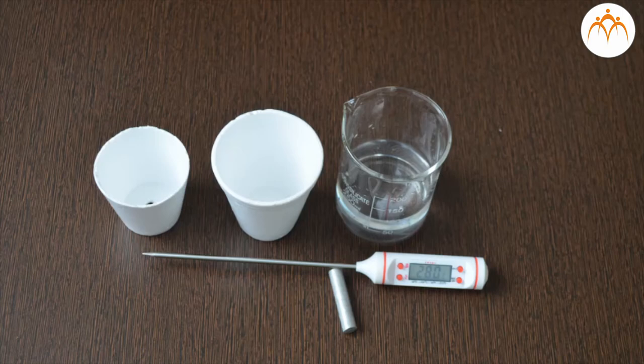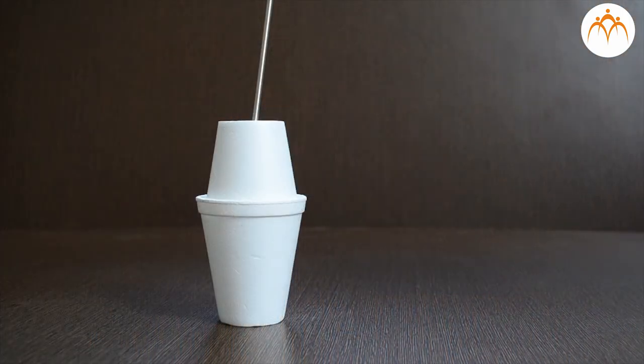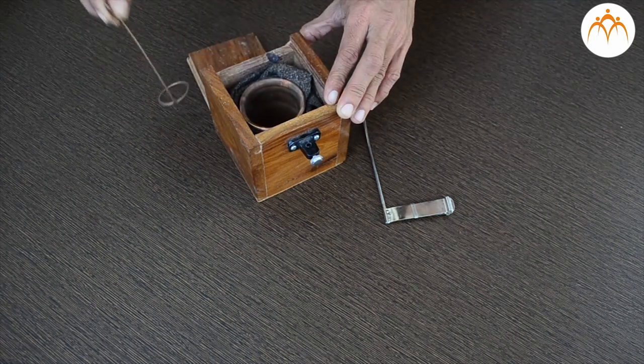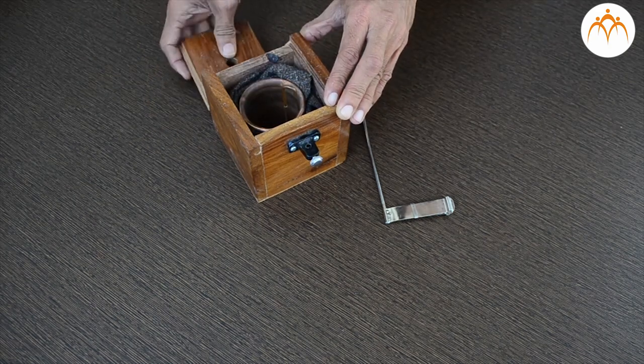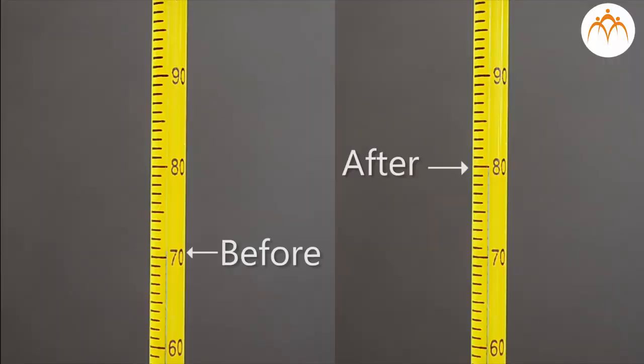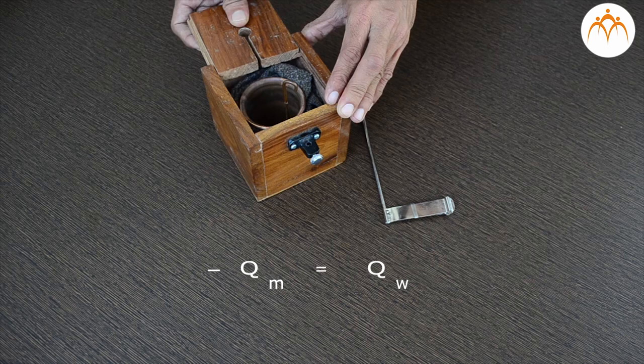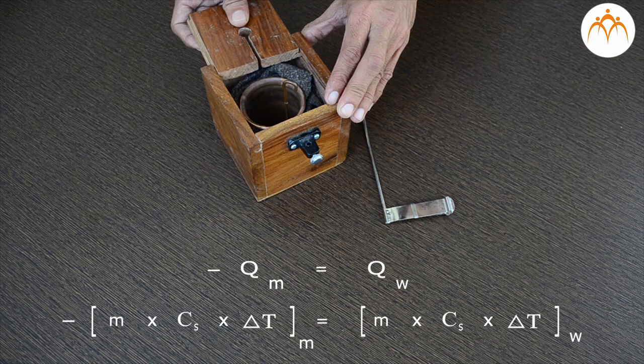Summary. We discussed the need for calorimeter and built a simple version of it. Calorimeter is used to measure the amount of heat produced or absorbed in a chemical reaction. It essentially measures the temperature difference before or after the reaction. We can calculate the heat generated or absorbed, or initial temperature or final temperature of the material using the known formula. Minus Qm is equal to Qw. Minus of M into Cm into delta Tm is equal to M into Cw into delta Tw.